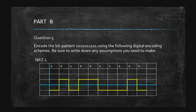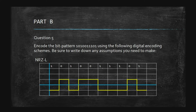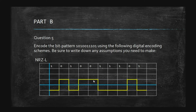Next is about drawing digital encoding patterns. You are given a bit stream: 1 0 1 0 0 1 1 1 1 0 1. Using digital encoding schemes — note any assumptions you make. For NRZ-L: assume it starts with positive. In NRZ-L, 1 is negative and 0 is positive, so the pattern for the given stream is: negative, positive, negative, positive, positive, positive, negative, negative, negative, negative, positive, negative.